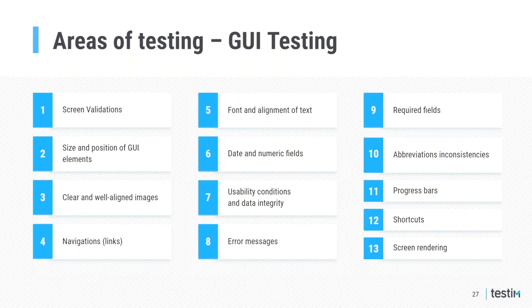For web-based GUI testing, there is a good list of things you would typically test. In a similar fashion, you can classify different areas for API testing — for example, integration testing, security testing, and so on. You analyze your needs and then start implementing tests based on your objectives.